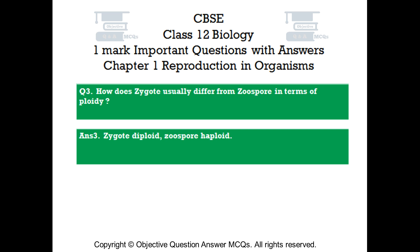Question number 3: How does a zygote usually differ from a zoospore in terms of ploidy? Answer number 3: Zygote is diploid; zoospore is haploid.